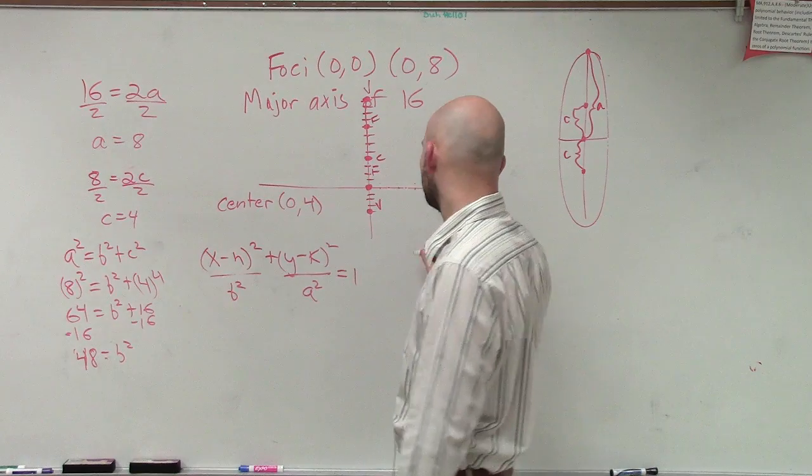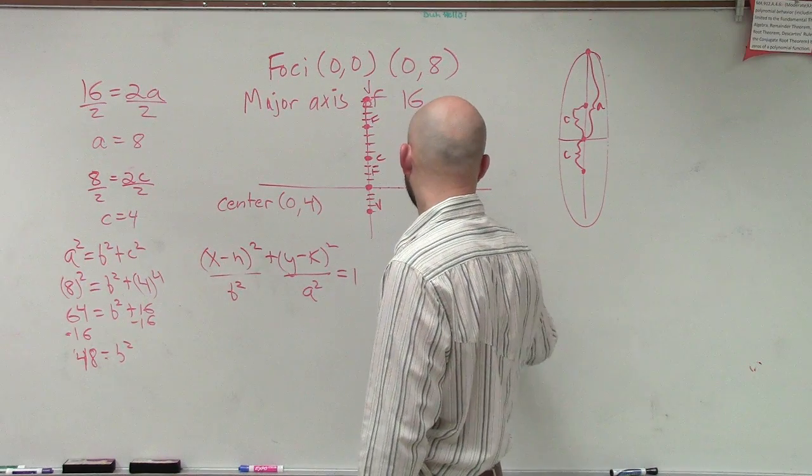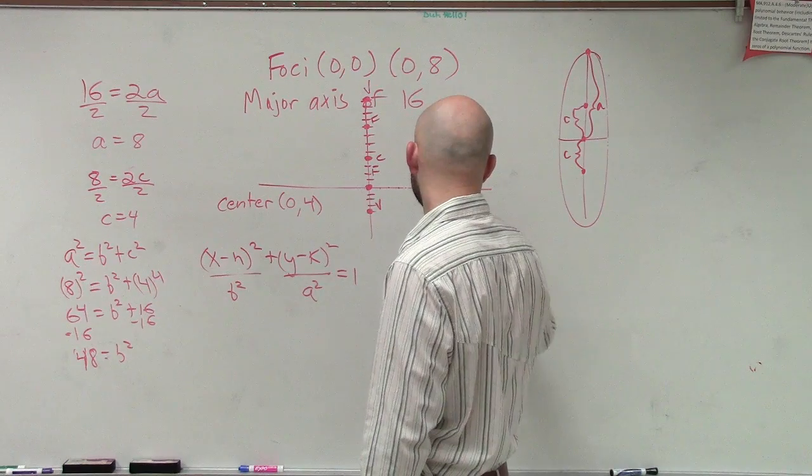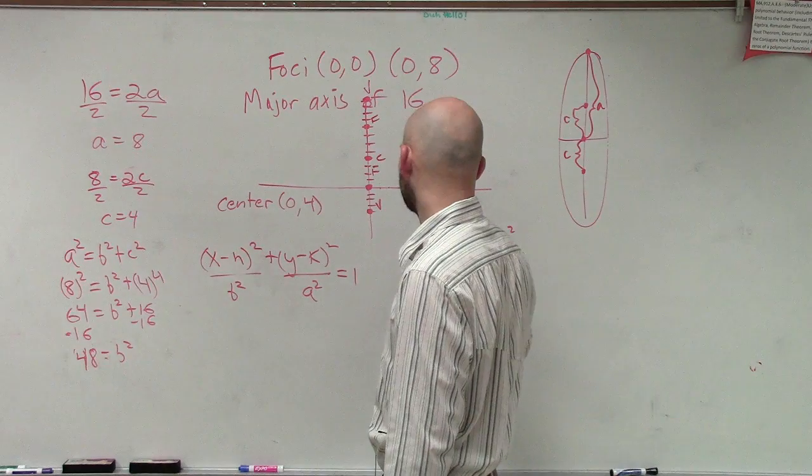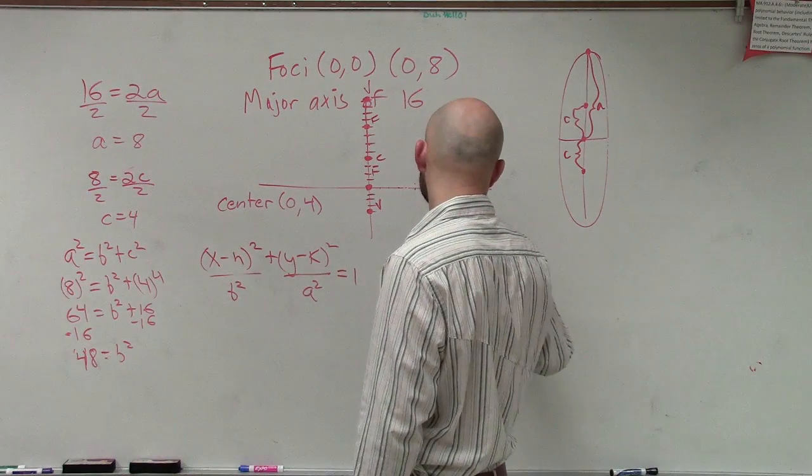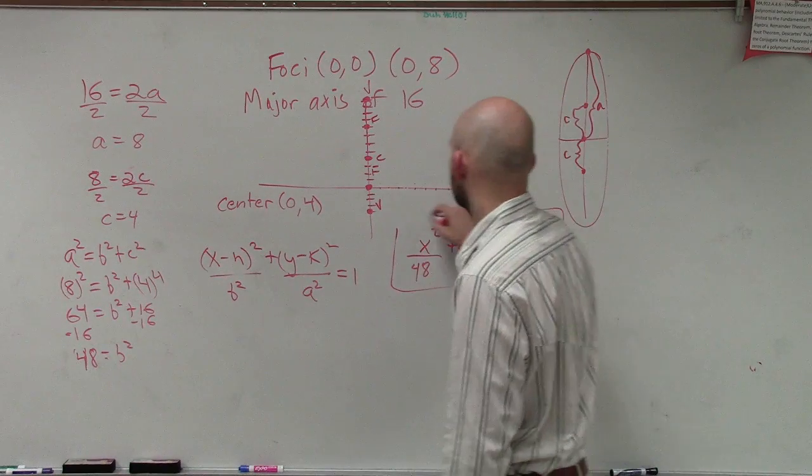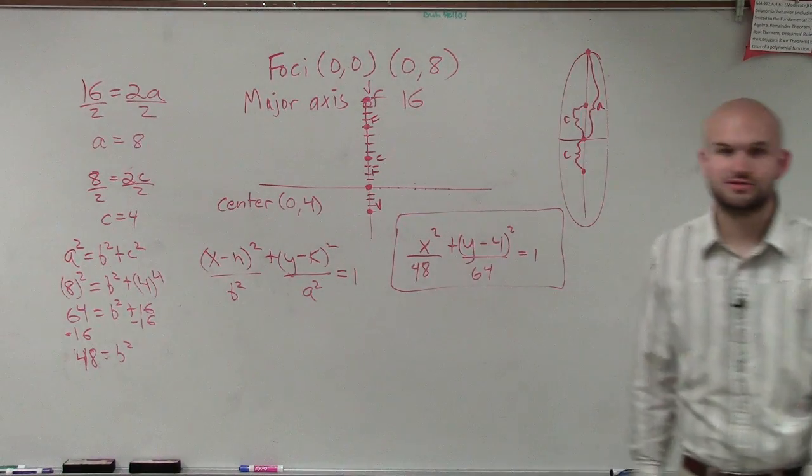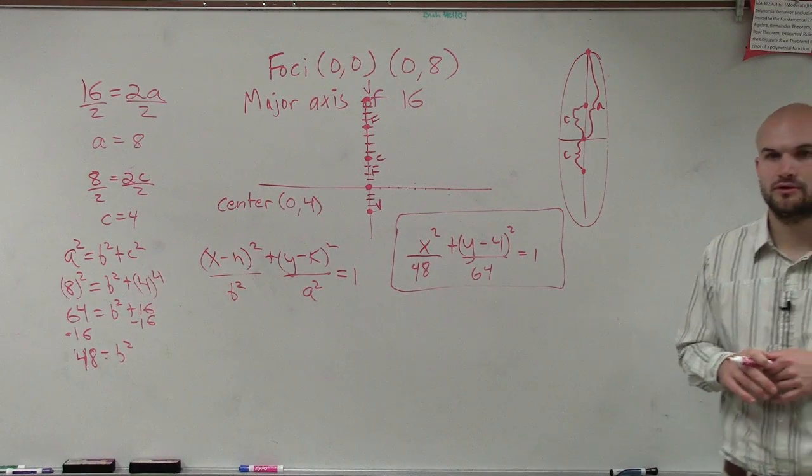So, to plug everything in, H is going to be 0. So, we're just left with X squared plus (Y minus 4) squared all over B squared is 48, all over A squared, which is 64, equals 1. So, there you go. That's your standard form. Does that make sense?